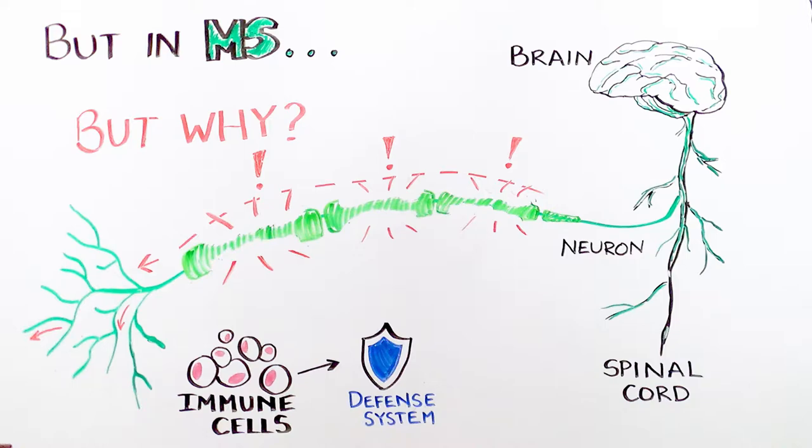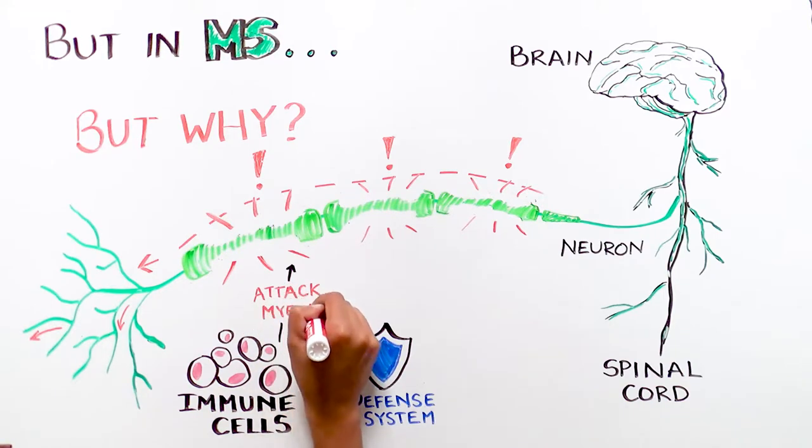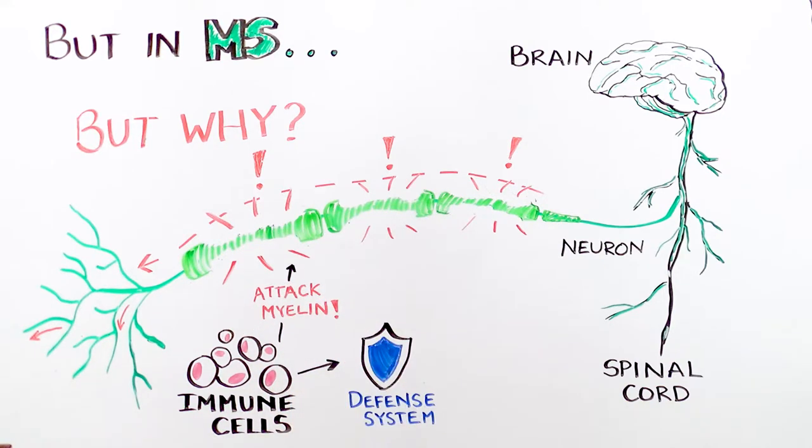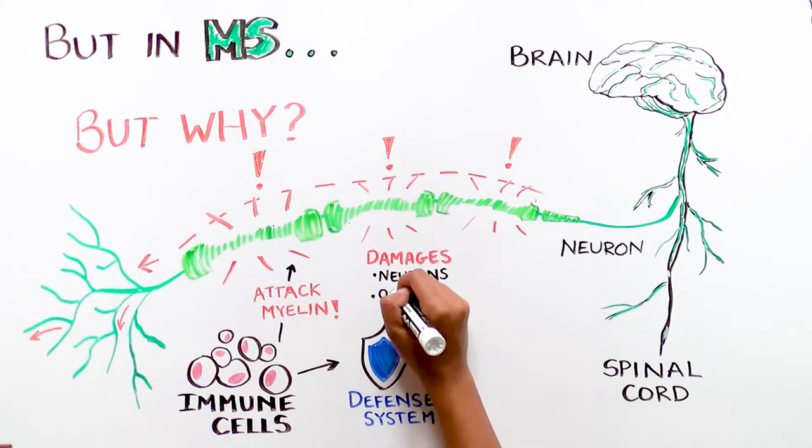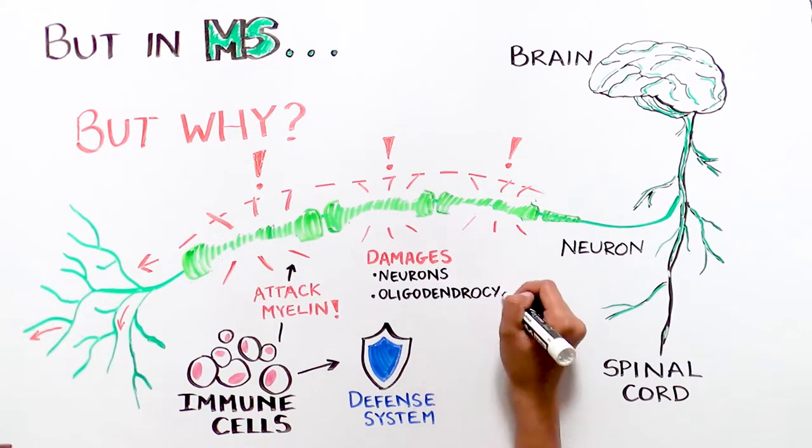However, in MS, immune cells go awry and instead of attacking foreign pathogens, they begin attacking the protective myelin that surrounds the nerves. This eventually damages both the neurons themselves and the cells that produce myelin, which are called oligodendrocytes.